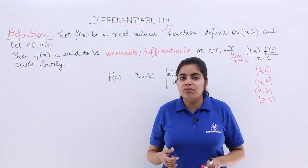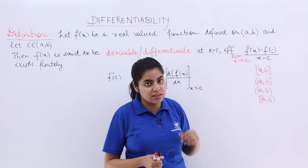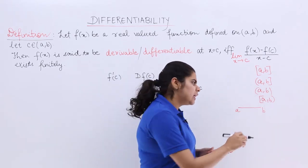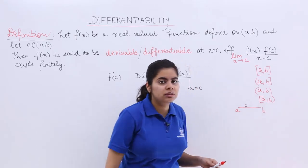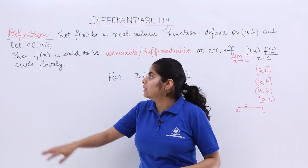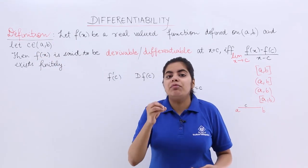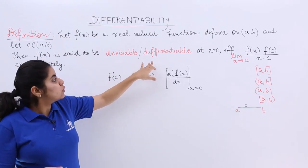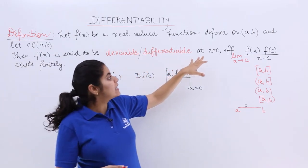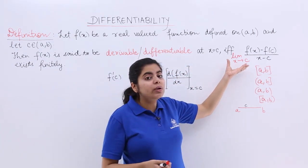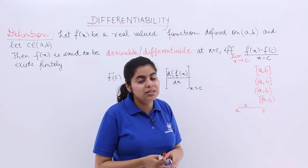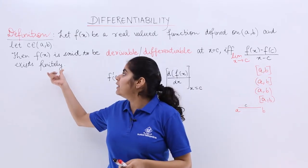Coming back to the definition: we have f(x) as the real valued function, and (a, b) as the open interval. Somewhere in that open interval, suppose here is a, here is b, and there is a point c in between — c belonging to the interval (a, b). Then we say that f(x) is differentiable or derivable at x = c when this condition is satisfied: the limit of [f(x) − f(c)] / (x − c) as x tends to c exists and is a finite quantity.